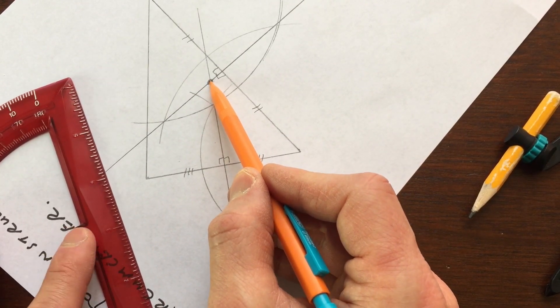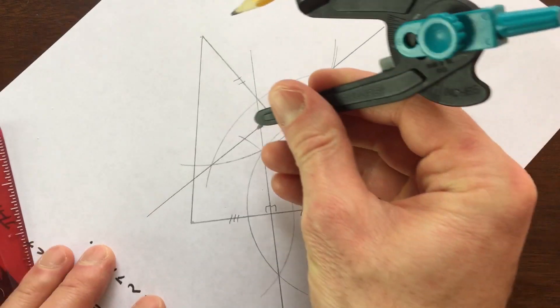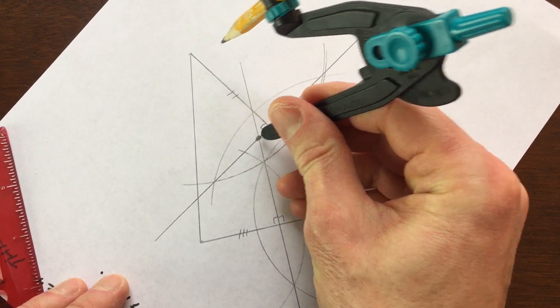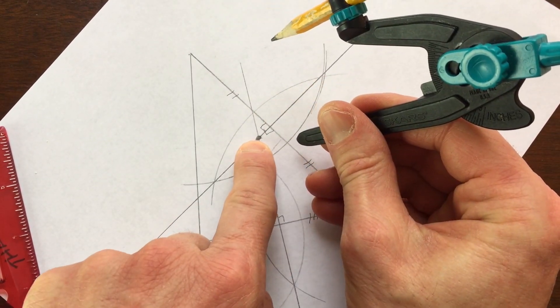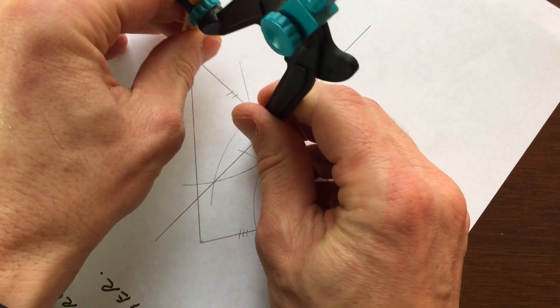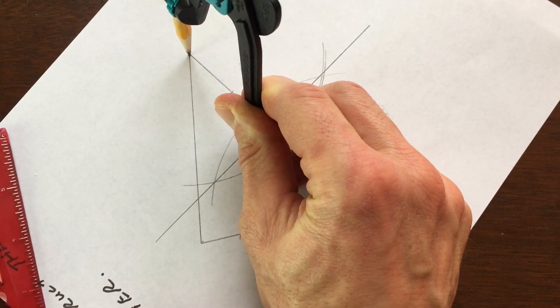So now what you're going to do is use your compass, and you're going to measure the distance from that point of concurrency, that circumcenter, to one of the vertices of the triangle like that.